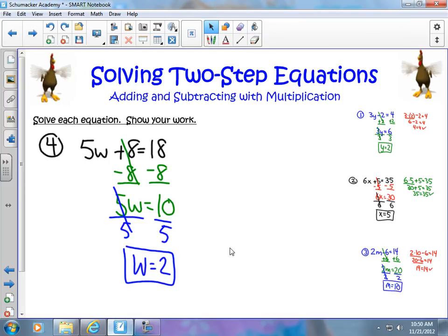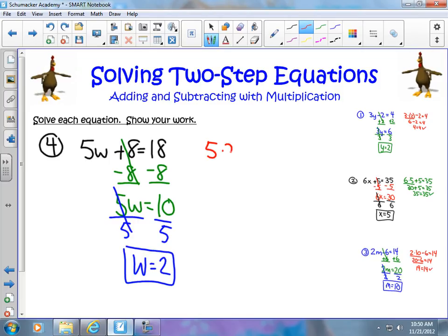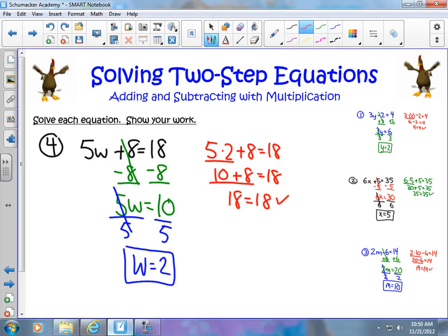And I can go ahead and check my work by simply plugging in the answer. 5 times 2 plus 8 should give me 18. 5 times 2 is 10, plus 8 should give me 18. And it does, in fact, give me 18 equals 18. And, as we see, our answer is correct.